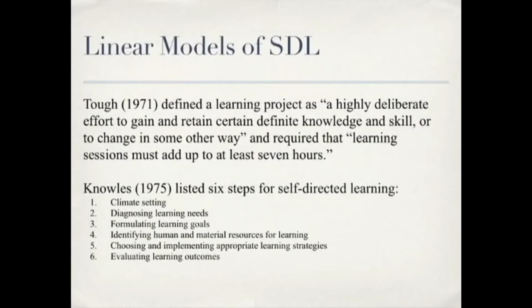As discussed in the first video podcast in this series, the University of Toronto's Alan Tough conducted the earliest formal research into self-directed learning. His research found that seventy percent of all learning projects undertaken by adults were planned by the learners themselves. Tough defined a learning project as 'a highly deliberate effort to gain or retain certain definite knowledge and skill, or to change in some other way,' and required that 'learning sessions must add up to at least seven hours.' His research suggested a linear stage process through which learners progress towards their goals.